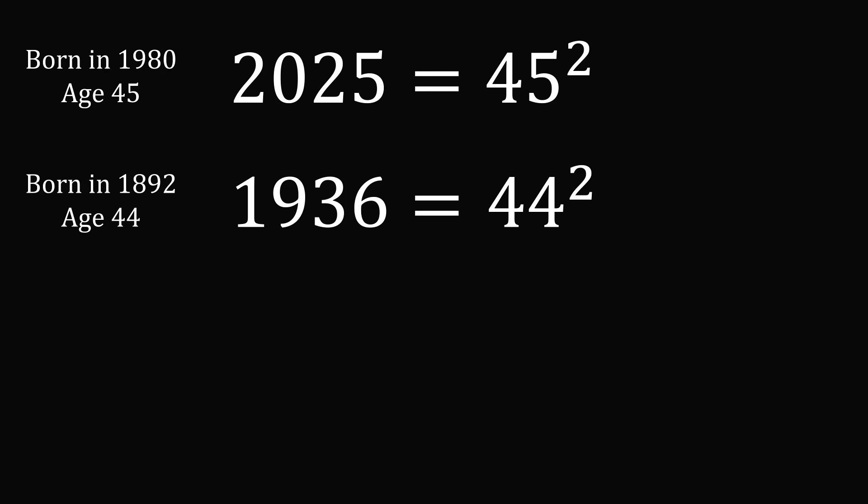When is the next time this could happen? Well, 45 squared is equal to 2025, so the next time will be 46 squared and that is equal to 2116. In order to be the appropriate age, you would then have to be born in 2070, so you would be 46 in the year 2116.